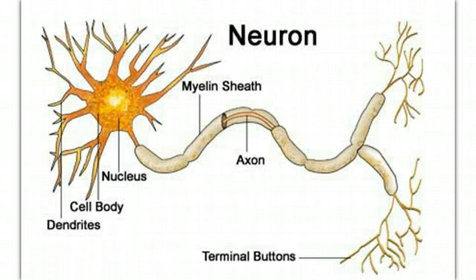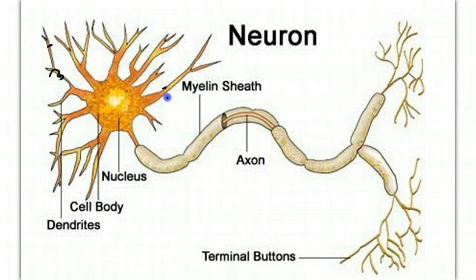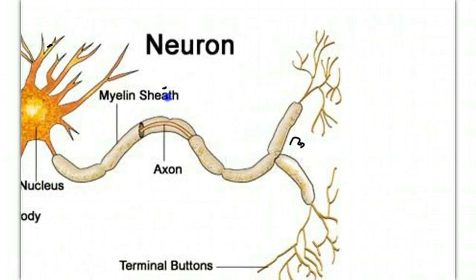Now all the events we just described were local — they occurred at a single spot on the cell membrane. So if that action potential happened here, it happened only here. But we talk about action potentials traveling, generated and traveling down the dendrites, through the cell body, and then being sent down the axon. However, thinking about an action potential traveling is not the right way to think about it.